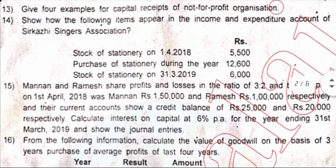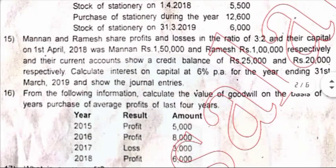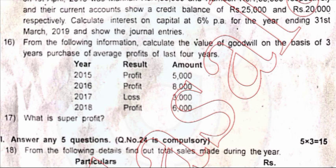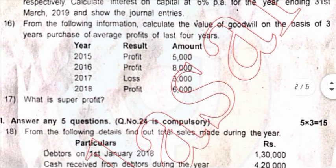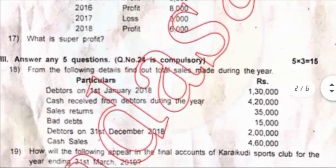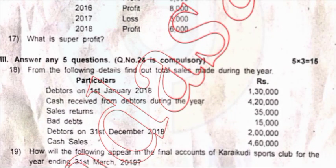Question 16: from the following information, find the value of goodwill on the basis of three years' purchase of average profit for the last four years: 2015 profit 5,000; 2016 profit 8,000; 2017 loss 3,000; 2018 profit 6,000. What is super profit? Section 3, question number 24 is compulsory.